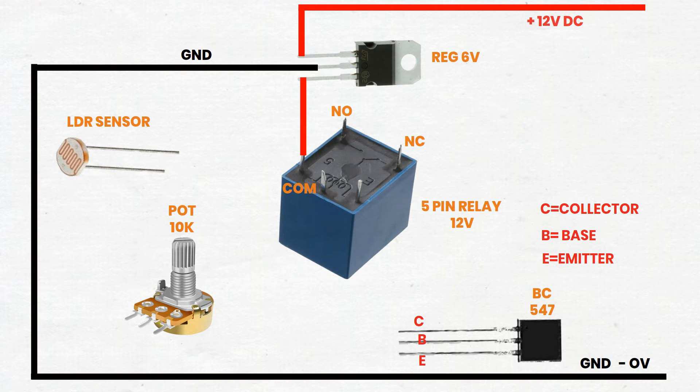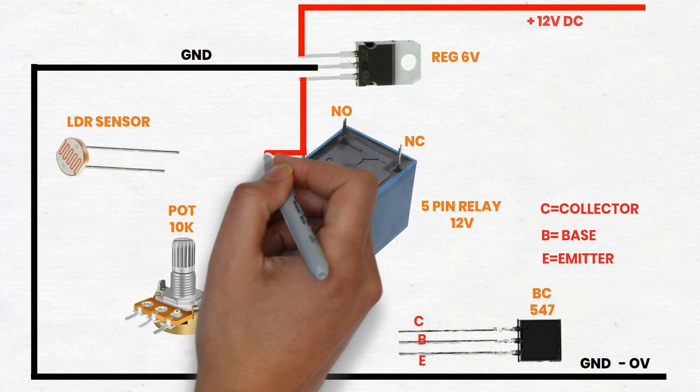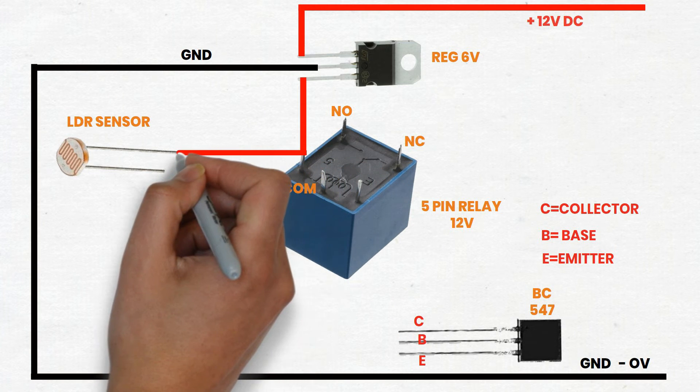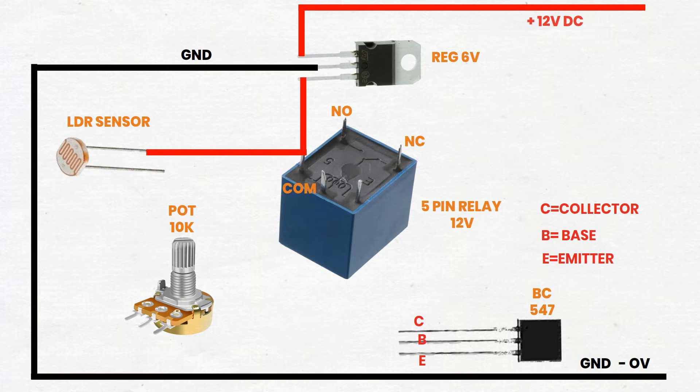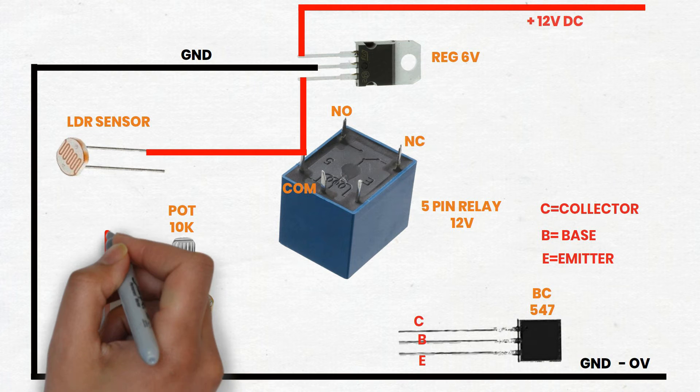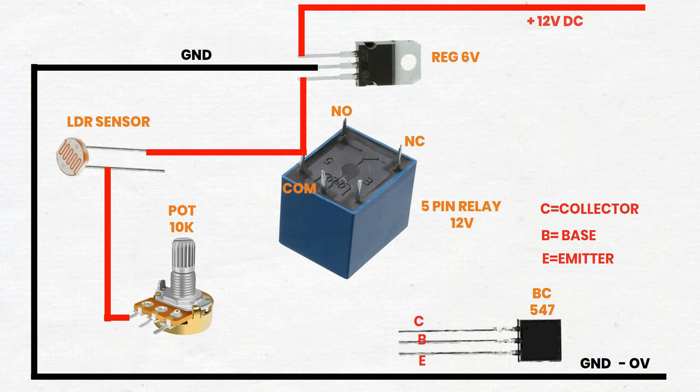Step 2. Set up the LDR and potentiometer. Voltage divider: Connect one end of the LDR to the 6V output from the regulator. Connect the other end of the LDR to the wiper of the potentiometer. Connect one end of the potentiometer to ground.